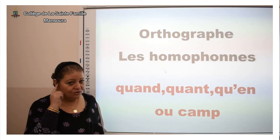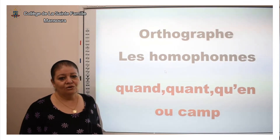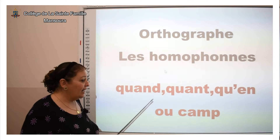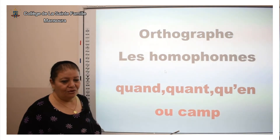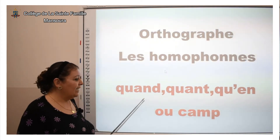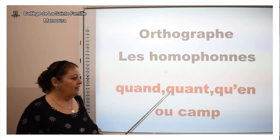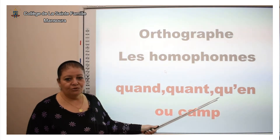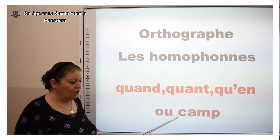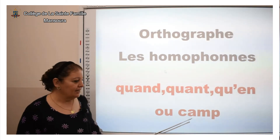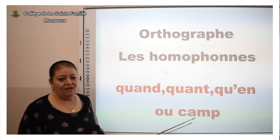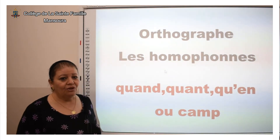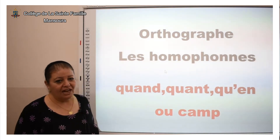Quand on entend « quand », on entend la même chose, mais quand on voit, on voit quatre différents « quand » : il y a « quand » avec D, « quand » avec T, « qu'en » en deux mots, ou « camp » avec C-A-M-P. On va découvrir ensemble quelle est la différence entre chaque « quand ».